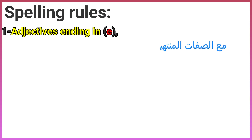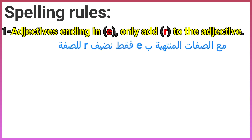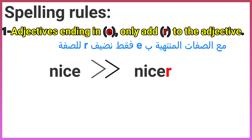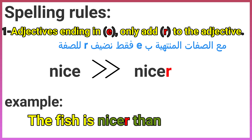Spelling rule one: adjectives ending in e — only add r to the adjective. For example: nice → nicer. Example sentence: the fish is nicer than the ostrich.